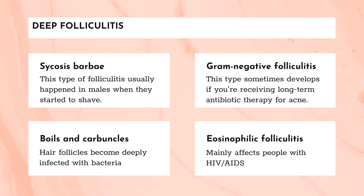The fourth form of deep folliculitis is eosinophilic folliculitis, which mainly affects people with HIV. Symptoms include intense itching and recurring patches of bumps and pimples that form near hair follicles of the face and upper body. Once healed, the affected skin may be darker than surrounding skin. The exact cause of eosinophilic folliculitis is not fully known.